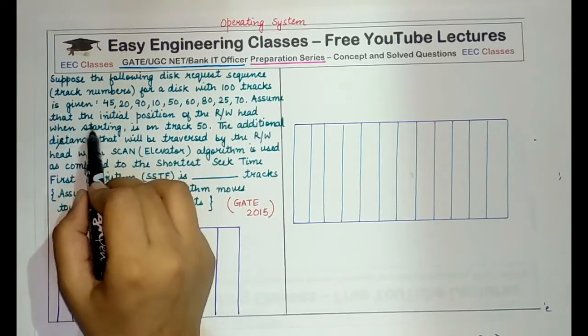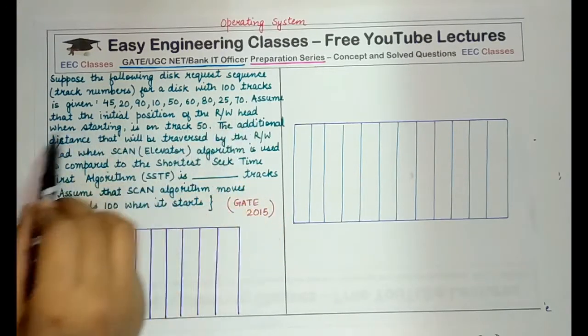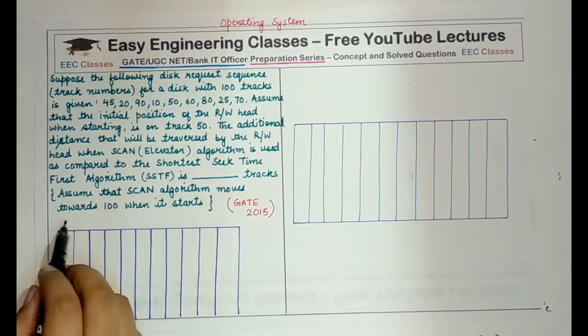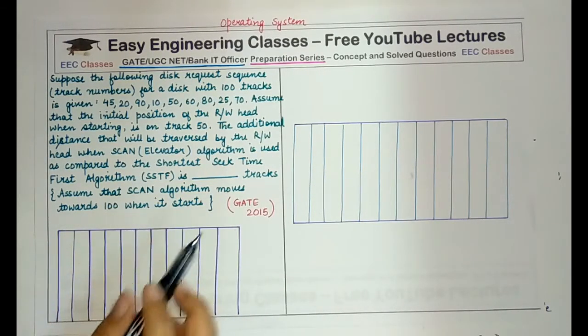Assume that the initial position of the read-write head when starting is on track 50. The additional distance that will be traversed by the read-write head when SCAN or the elevator algorithm is used as compared to the shortest seek time first algorithm is dash number of tracks. You have to assume that the scan algorithm moves towards 100 when it starts.